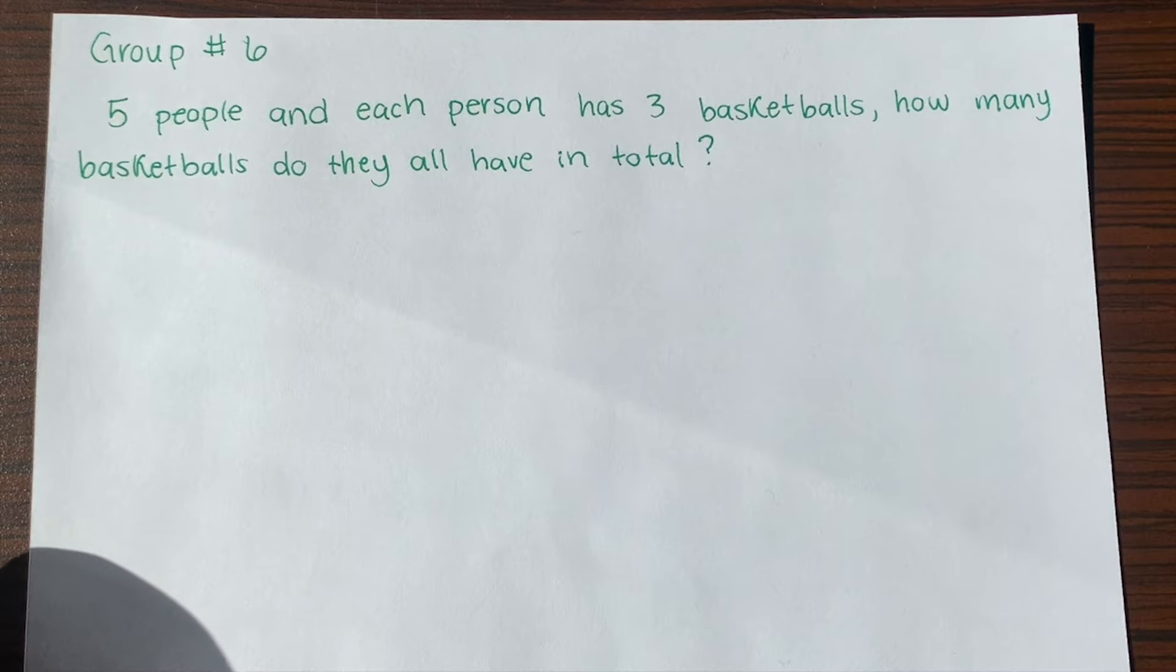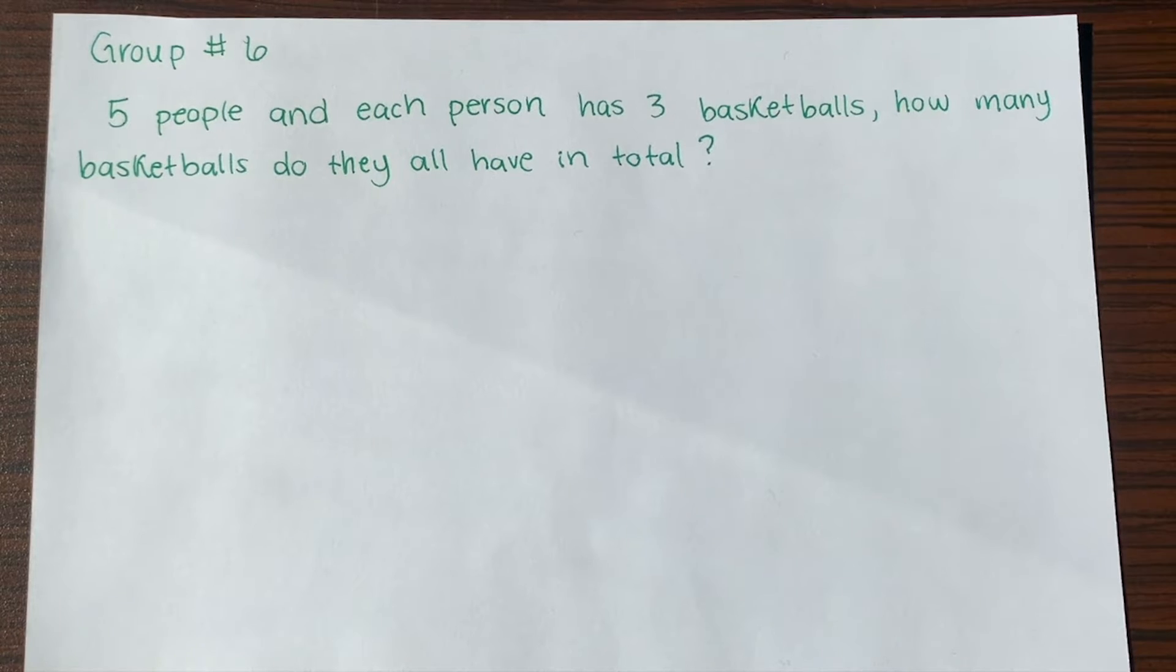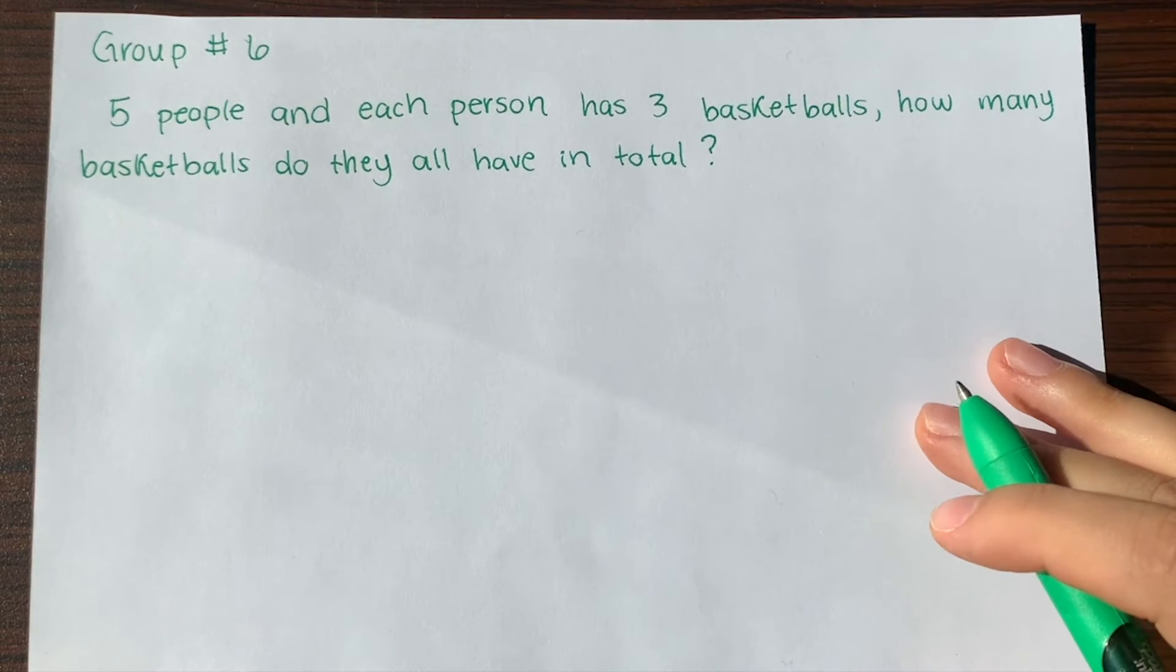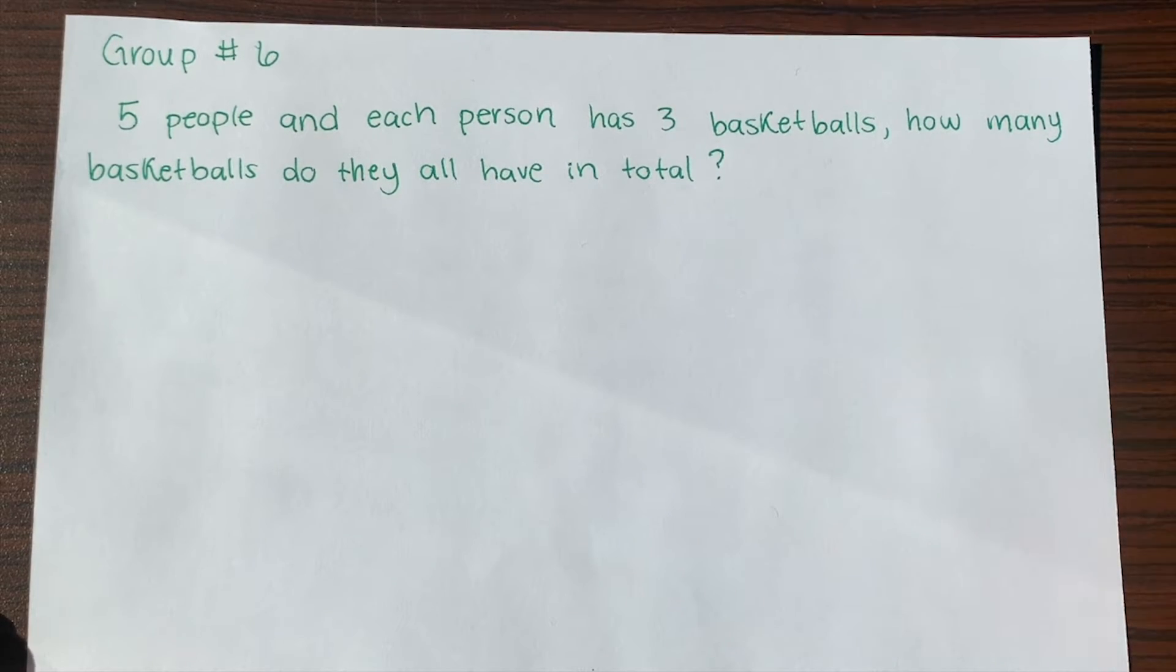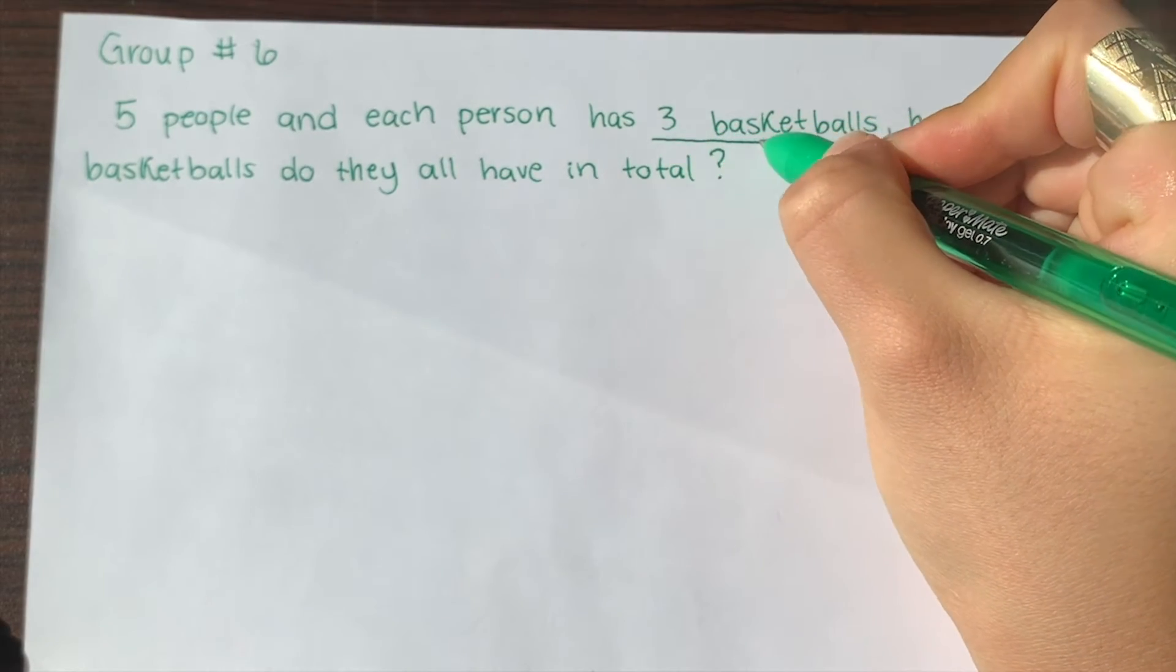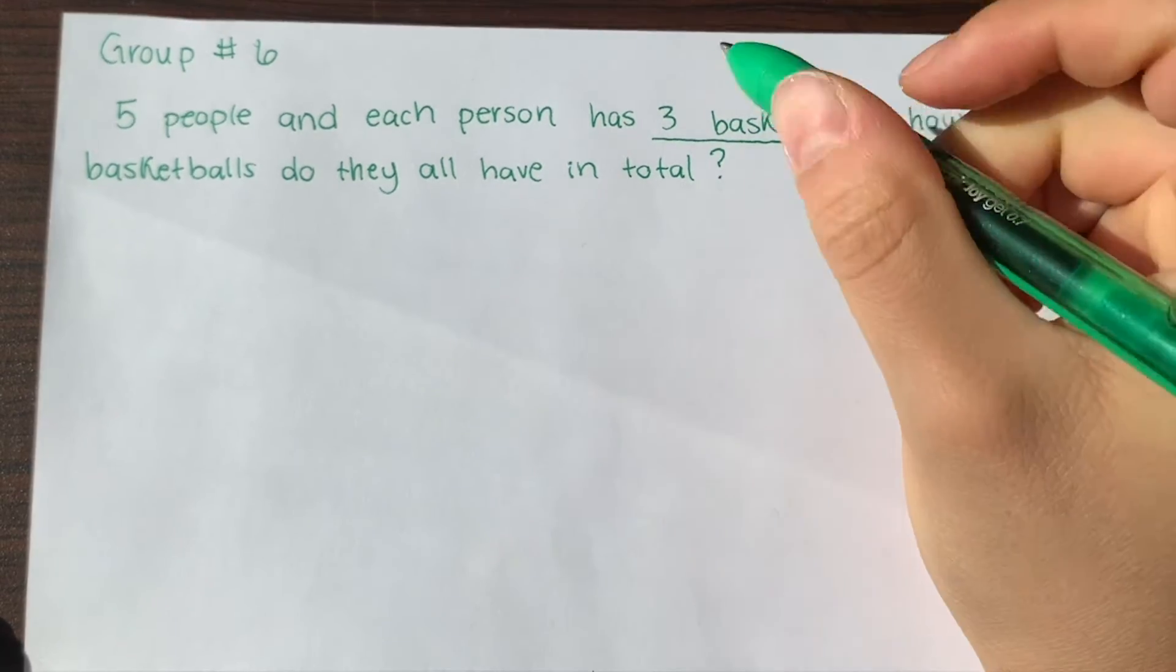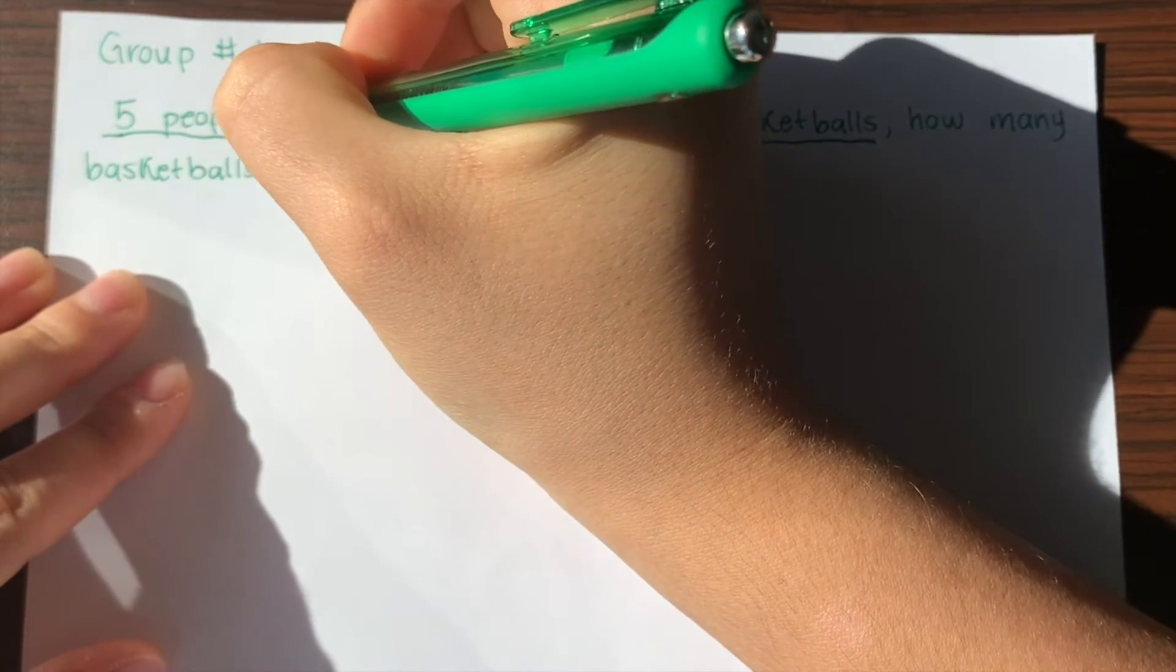To solve this we really have to focus on multiplication and put an equation together. I'm going to go through and actually underline the important information that they give us, which means that they have three basketballs, that sounds important, and there's five people. That's also important.